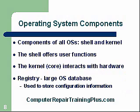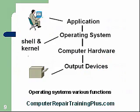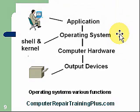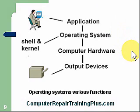Here's a diagram showing the user at the top running an application. The application interfaces with the operating system. We have the shell, which provides the user interface, and then the kernel, which is the core of the operating system. The kernel controls the hardware and outputs to both the video screen and possibly a printer.